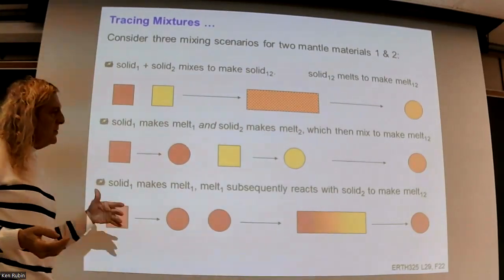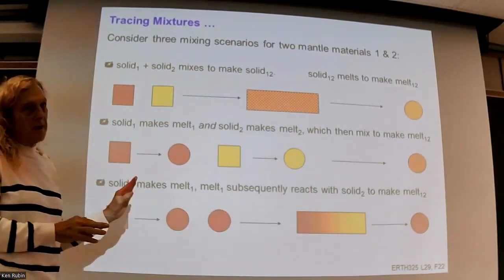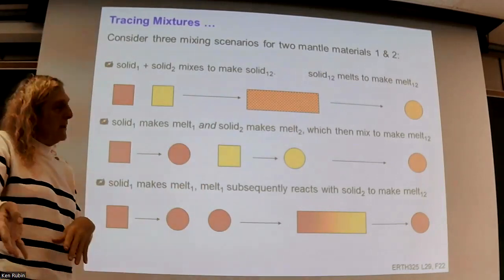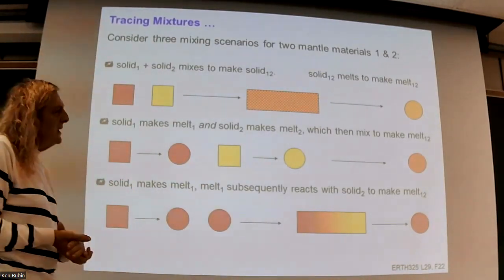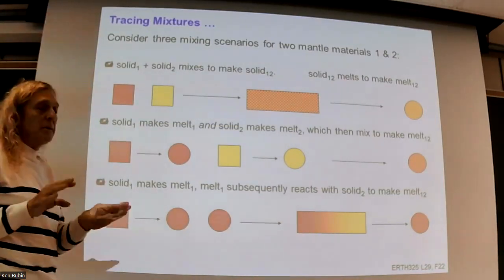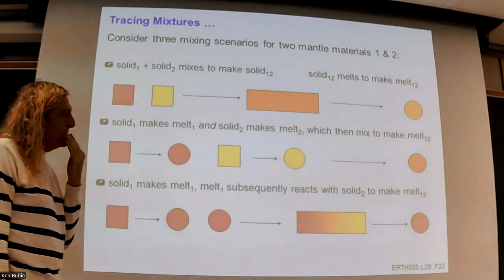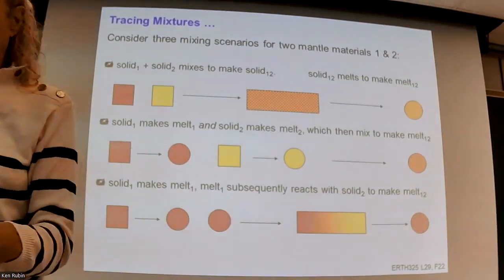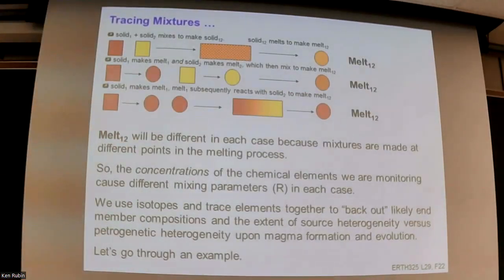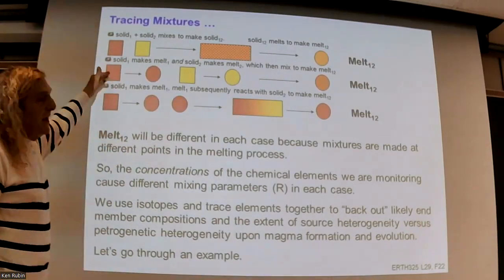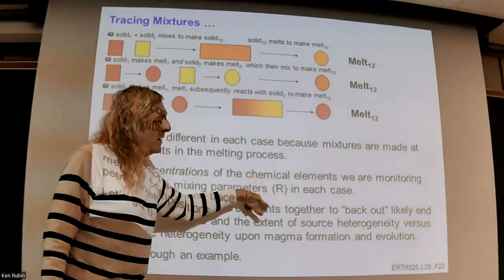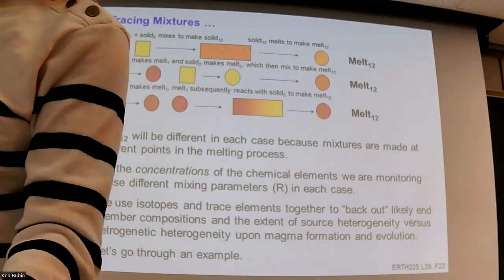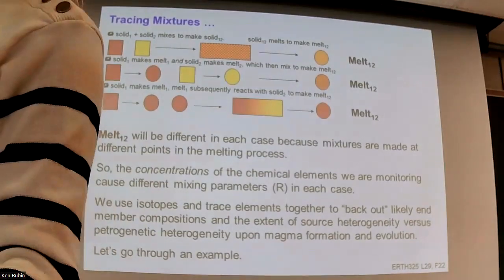We have to do modeling to figure out which of these scenarios is happening — sometimes more than one simultaneously. We use multiple isotope ratios and multiple trace element ratios, do scenario testing, and say here's what we think could have happened and here's what probably didn't. That's usually the gist of most isotope and trace element geochemistry studies. Even though we don't get definitive answers, we get enough to say something about the mantle and magma processes. Part of how we distinguish the scenarios is through that mixing parameter r, the concentration contrast of the two denominator elements.